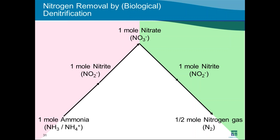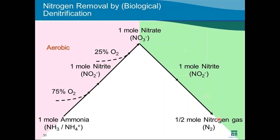The last application featured is nitrogen removal by biological denitrification. Ammonia entering the plant is converted to nitrate under aerobic conditions (nitrification). Under a different set of conditions — anoxic, with very low DO — that nitrate can be converted to nitrogen gas, which bubbles out of the system, removing nitrogen. Sufficient carbon is needed to drive the denitrification reaction.